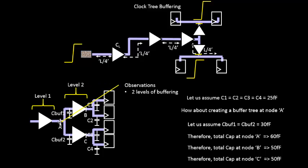So in this case, this particular node A, the capacitance that this node A is driving is 60 femtofarads.